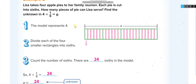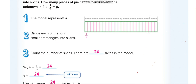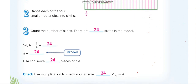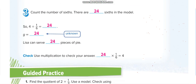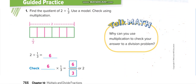The same thing again: multiply the whole number with the denominator. 4 times 6 equals 24. To check the answer, multiply 24 by 1/6: 24 times 1/6 equals 24/6, which equals 4. So the answer is correct. Let us move to the next page.